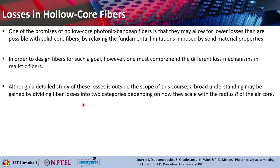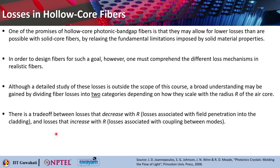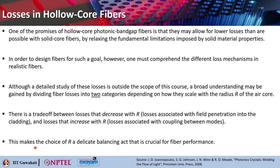Although the detailed study of each of these losses is not included in the scope of this course, a broad overview may be gained by dividing the fiber losses into two categories depending on how they scale with the radius R of the air core. There is a trade-off between losses that decrease with R — those associated with field penetration into the cladding — and losses that increase with R, which are associated with the coupling between different modes. This makes the choice of R a very delicate balancing act that is crucial for fiber performance, as the radius of the air core plays a very significant role in minimizing both types of losses.